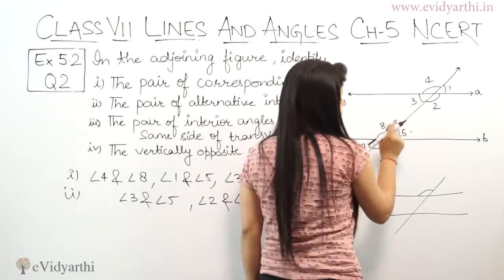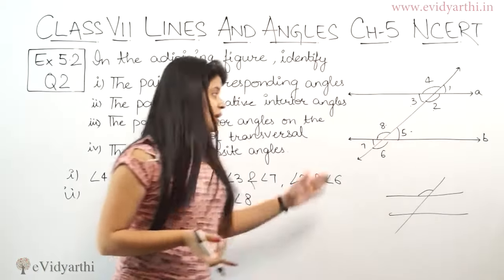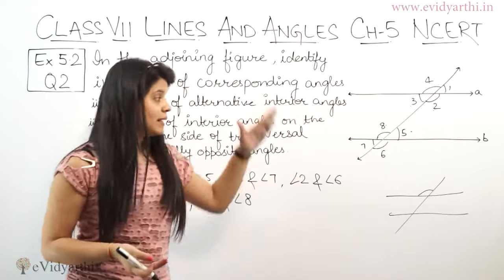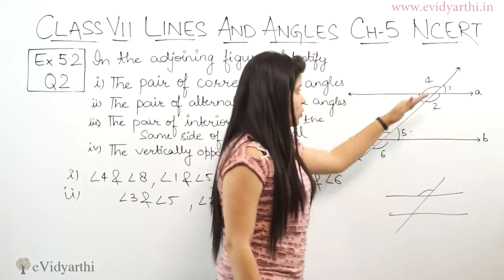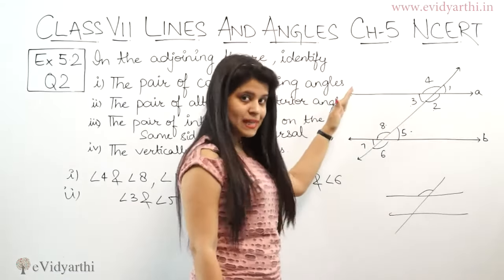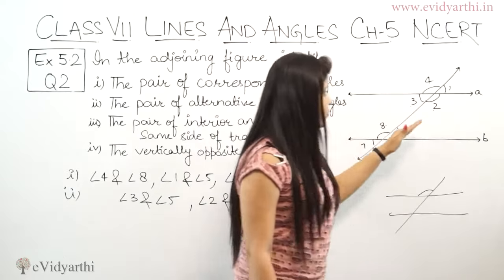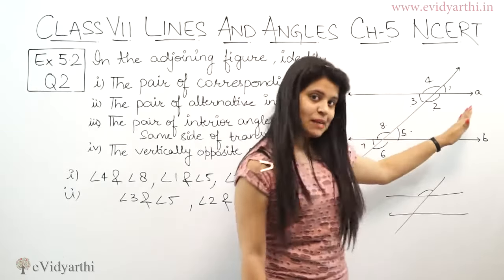These are 3, 2, 5, 8. Now we've seen these are interior angles. Now let's look at the same side of the transversal. 3 and 8, both are on the same side of the transversal. Similarly 2 and 5 are on the same side of the transversal.